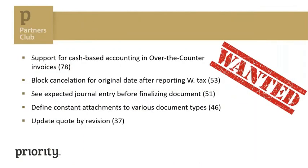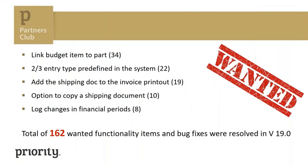We have a list of several things we took care of in this version. My main goal here is to explain how we decide what to do in each version — since there are so many things we want to do, one of the considerations is how many customers asked for a specific solution or raised a specific problem. We keep a wanted list, and in total we took care of 162 wanted items. As always, the full list of what's new on version 19 is detailed on the release note, which will be published on our website in the next few days.